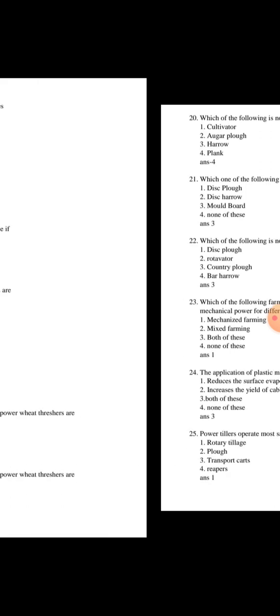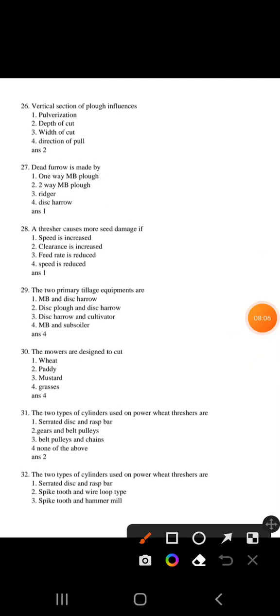Question 26: Vertical suction of plow influences depth of cut. Second option will be correct. Question 27: Dead furrow is made by mold board plow, so first option will be correct. Question 28: Thresher causes more grain damage if speed is increased.